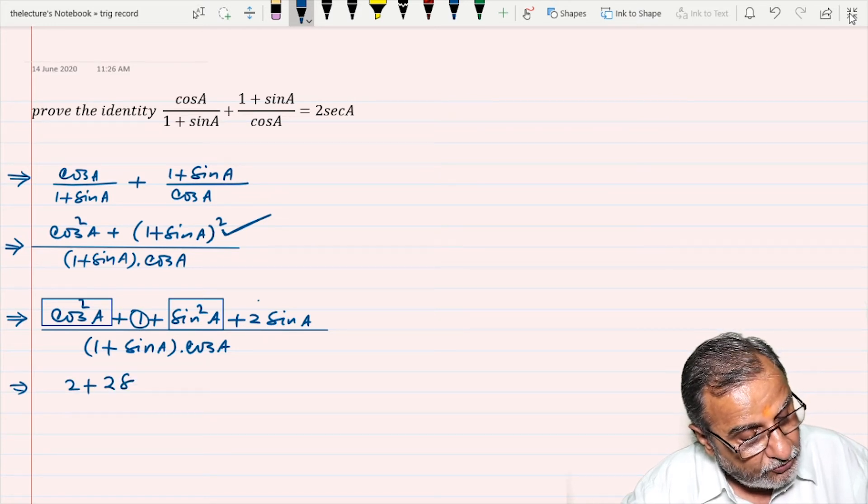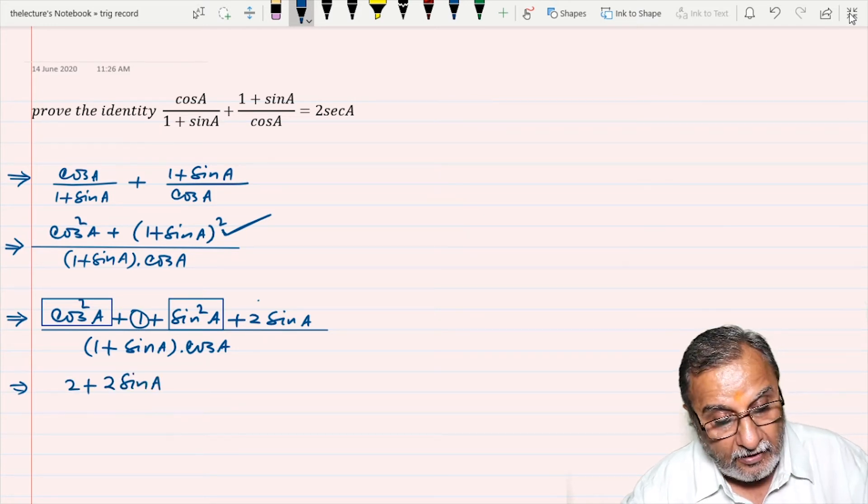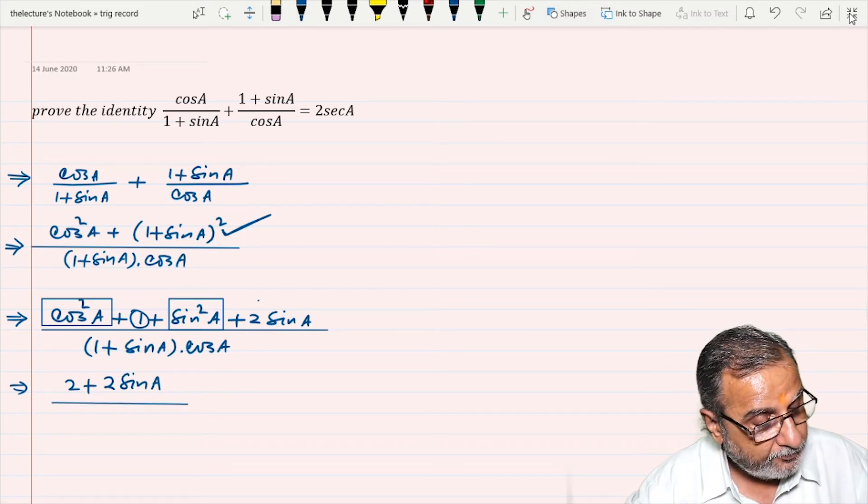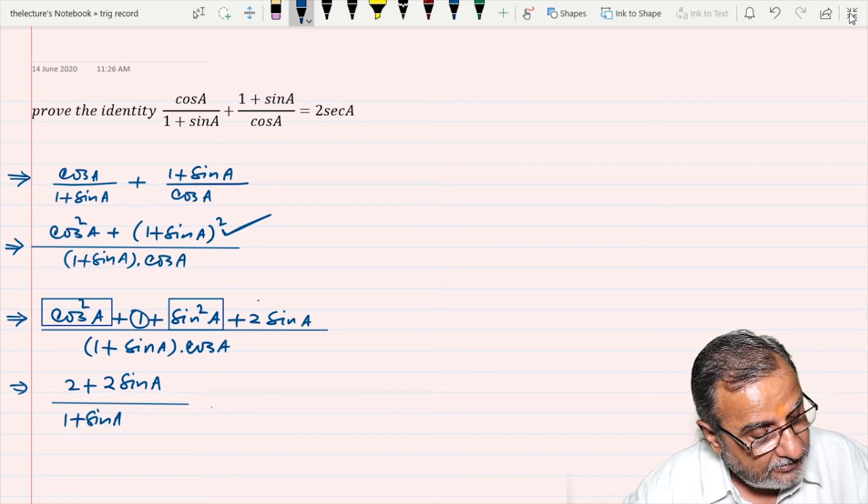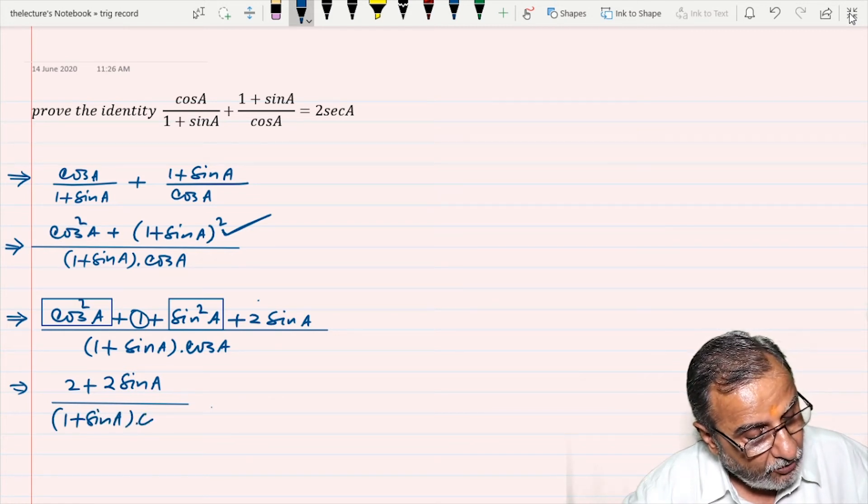So 2 + 2 sin A upon (1 + sin A) · cos A.